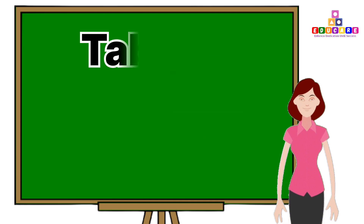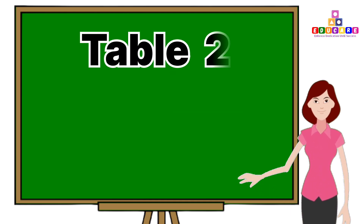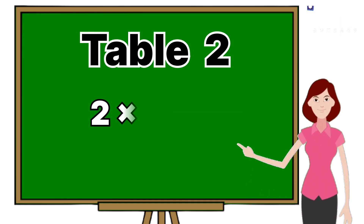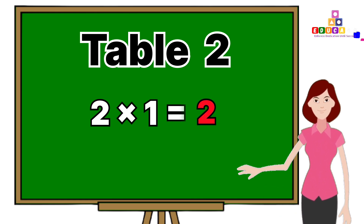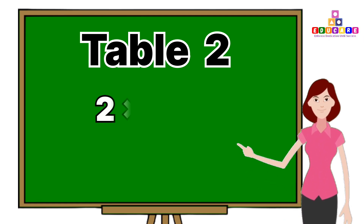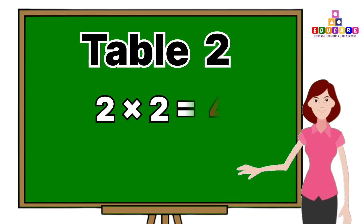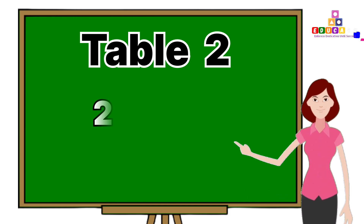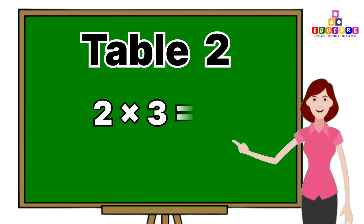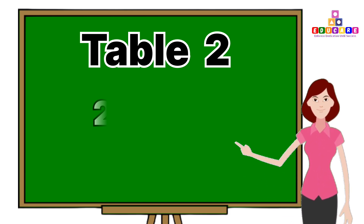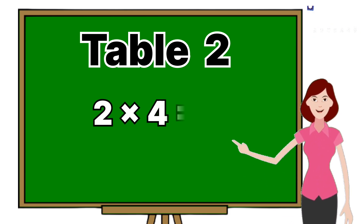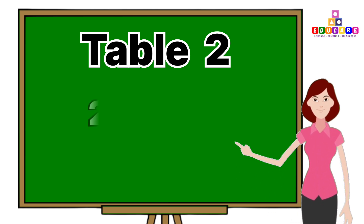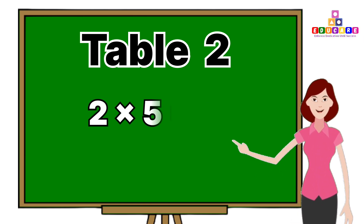Table 2. 2 ones are 2, 2 twos are 4, 2 threes are 6, 2 fours are 8, 2 fives are 10.